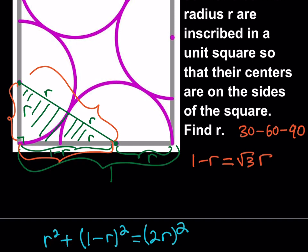Super easy to solve. We're going to bring these two together, and that's going to give me square root of 3 plus 1 times r is equal to 1.